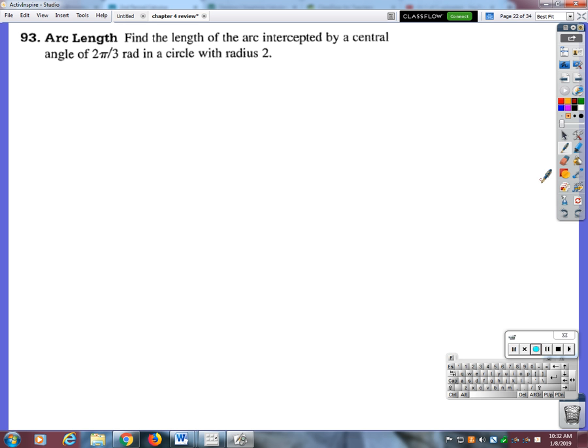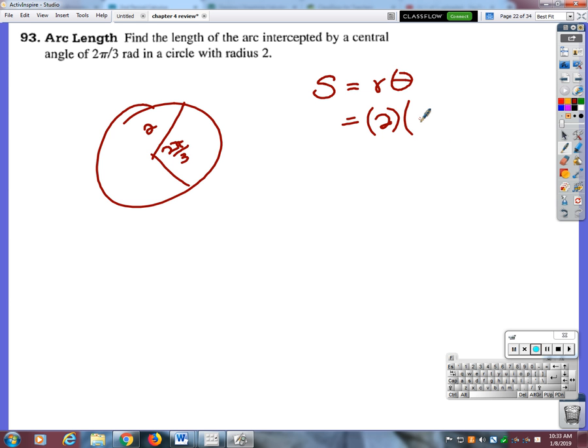Okay, find the length of the arc intercepted by a central angle of 2π/3 radians in a circle with a radius of 2. What's our formula for arc length? Anybody know? R theta. And R is the radius, and theta is the radians, not degrees. It's the angle in radians. So I literally just have to multiply those two things together. So you could leave this as 4π/3, or if you feel more comfortable, you could multiply those out on the calculator and get an approximate answer.